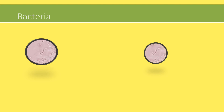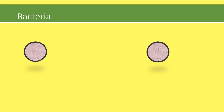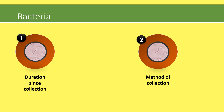The presence of bacteria in urine depends on duration since collection and the method of collection. Duration since collection means the sample should be tested or processed within two hours of collection. The method of collection to be employed is first morning clean catch midstream urine.